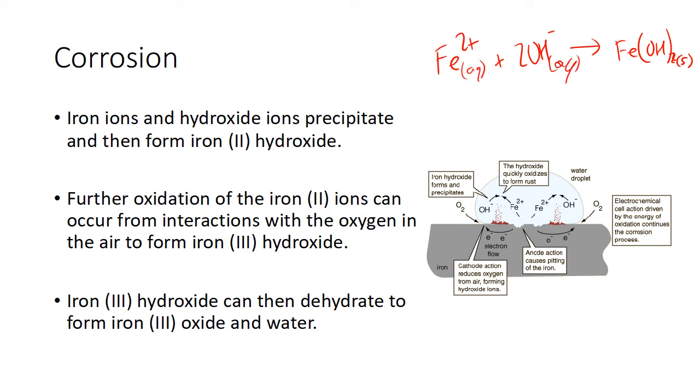Then further oxidation can occur where it turns into iron(III) hydroxide. So iron(II) hydroxide can turn into iron(III) hydroxide, which are both solids, with the addition of another OH⁻ ion. And then to balance that out, you need another electron there, so it needs to give away another electron.